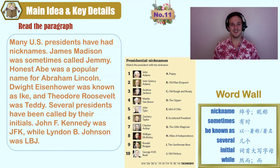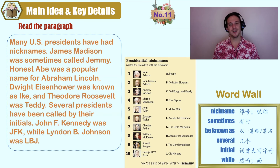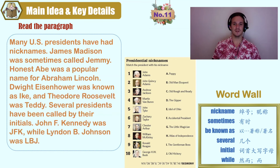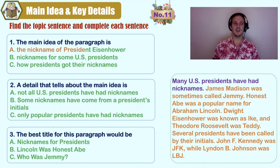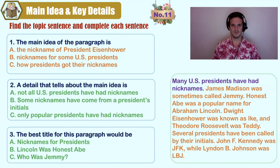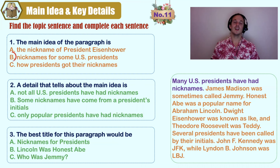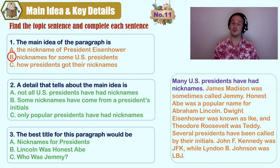There is an exercise you can try — matching the presidents with their nicknames using the column on the left with their nicknames on the right. The answers are upside down at the bottom. Back to our paragraph: what is the main idea? A) the nickname of President Eisenhower, B) nicknames for some U.S. presidents, C) how U.S. presidents got their nicknames. Not all U.S. presidents have nicknames, and this article is about how nicknames for some presidents exist and are known by many people.